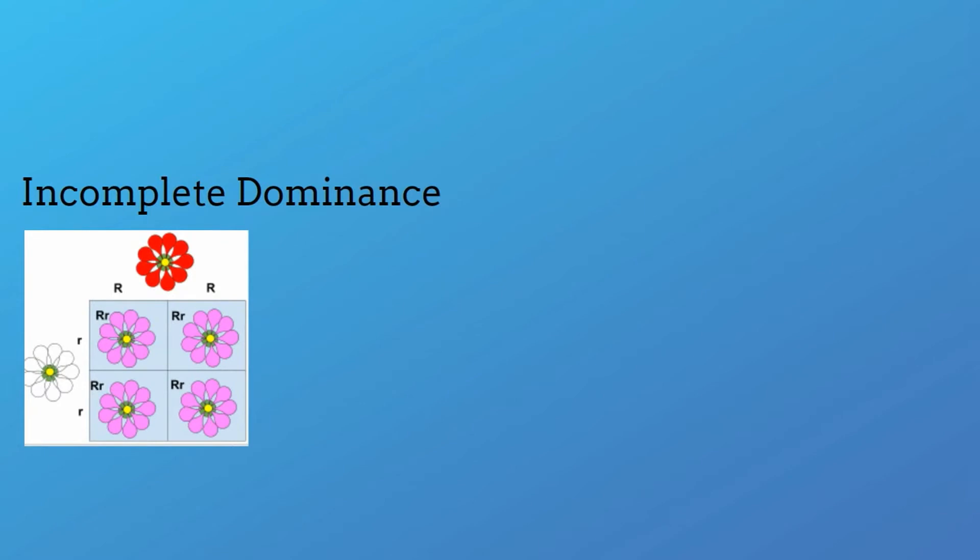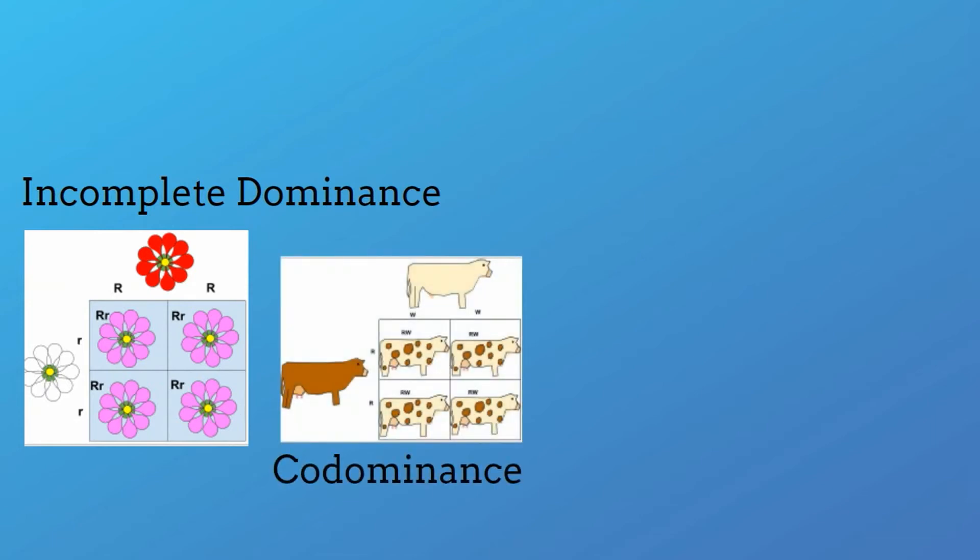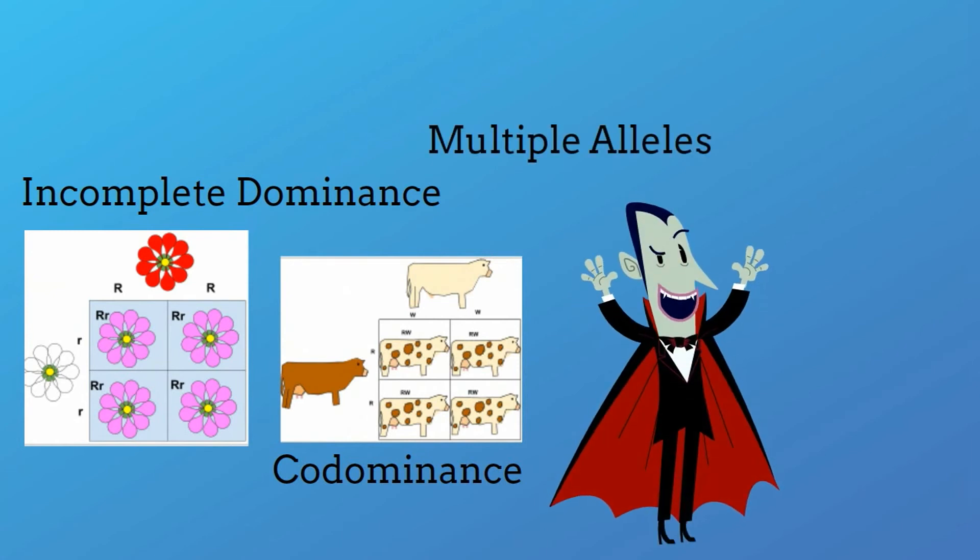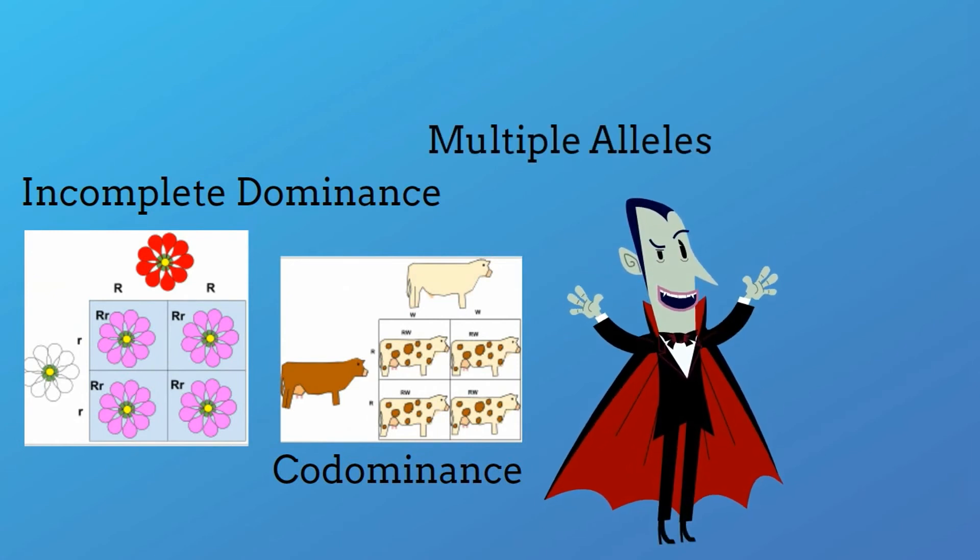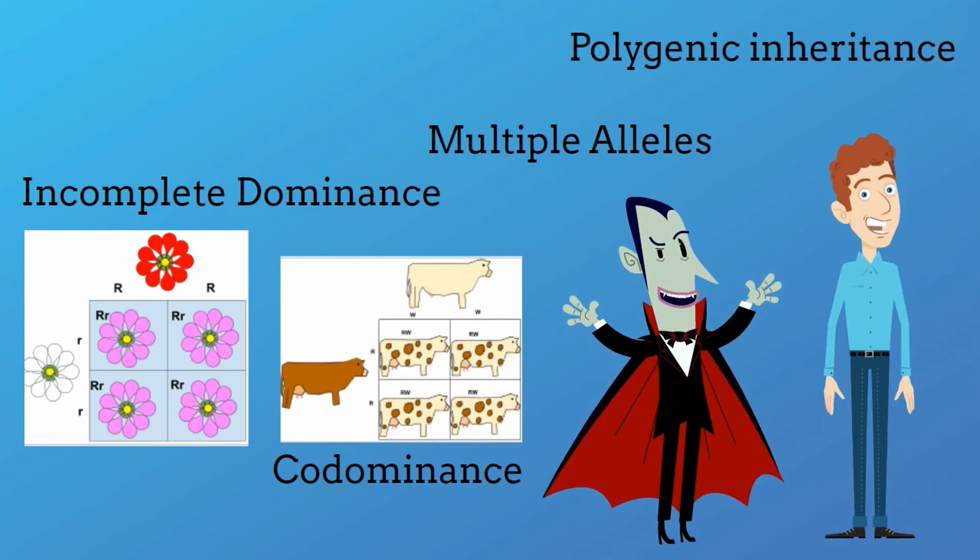In summary, you have incomplete dominance where both alleles appear like this pink flower being a combination of the white and red. Co-dominance where they both dominate like this cow with white and brown skin. You have multiple alleles where many alleles control one trait and polygenic inheritance in which many genes control a single trait like your height or skin color.